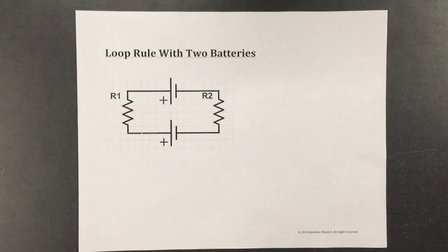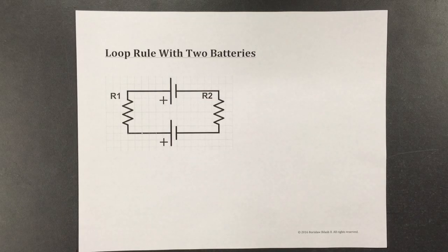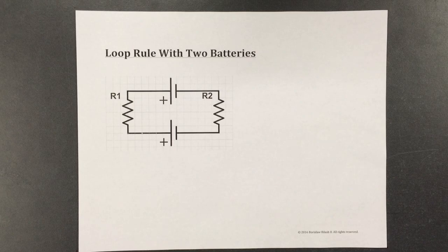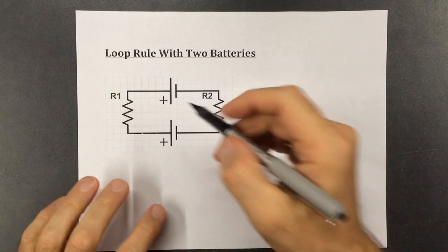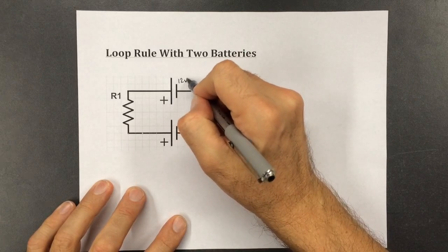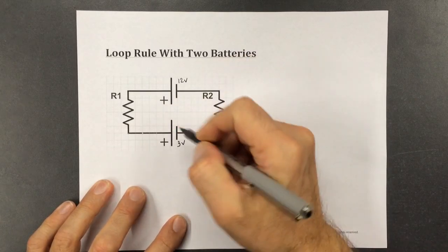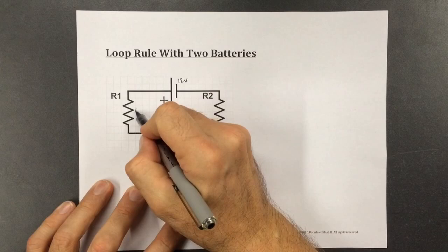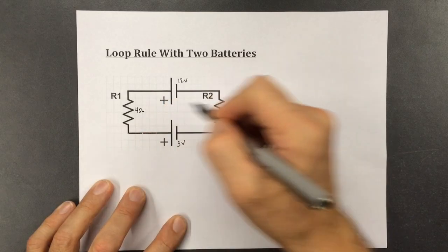In this lesson I will show you how to apply Kirchhoff's Loop Rule when you have a circuit that has two or more batteries. Let's first label the voltages of the batteries and the resistance of the components.